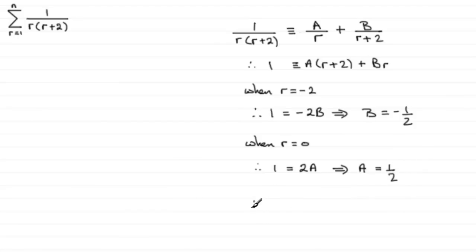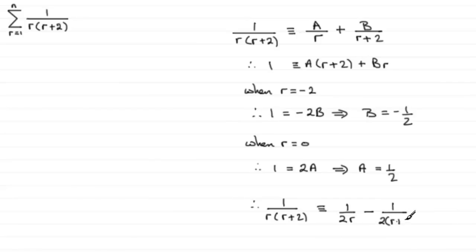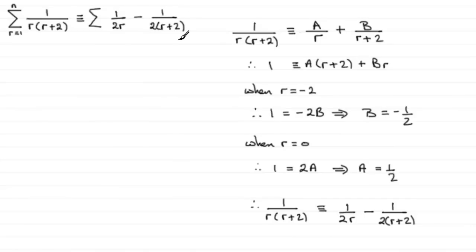So we can say that 1 over r(r+2) is identical to A over r, which is 1 over 2r, plus B over (r+2), which is minus 1 over 2(r+2). This means the summation is equivalent to summing [1/(2r) minus 1/(2(r+2))], for r going from 1 to N.